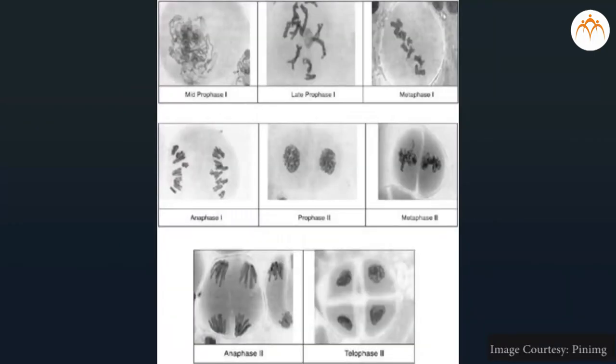Telophase 1: chromosomes reach opposite poles of the cell. Nuclear membrane and nucleolus reappear. Cytokinesis 1: the cytoplasm divides to form two haploid daughter cells.